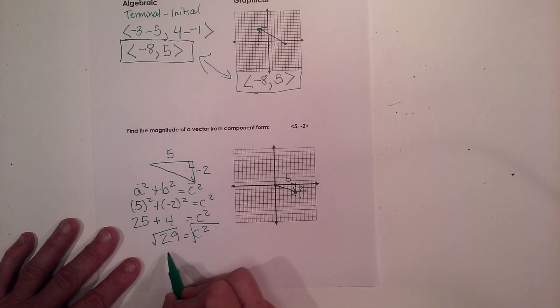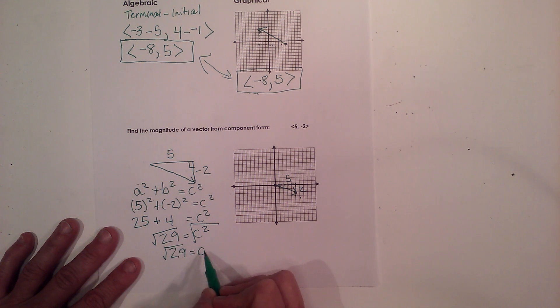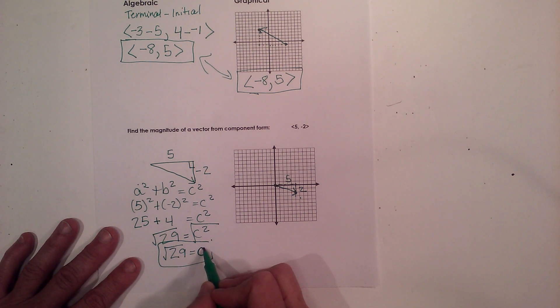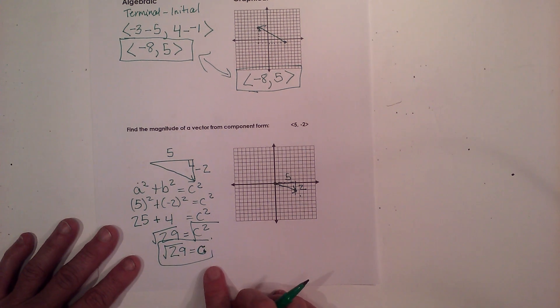And take the square root of both sides, so it ends up being the square root of 29. Now, the reason I don't take a negative is it is a length, therefore it must be positive.